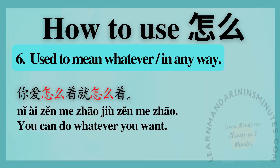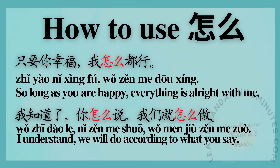Number six: used to mean 'whatever' or 'in any way'. Sentence examples. 你爱怎么着就怎么着 — You can do whatever you want. 只要你幸福,我怎么都行 — So long as you are happy, everything is alright with me.